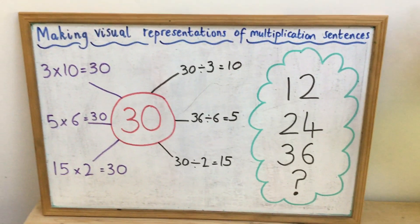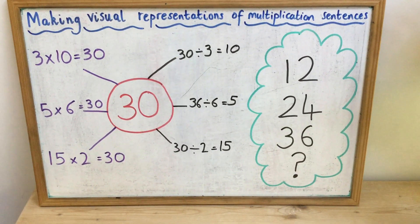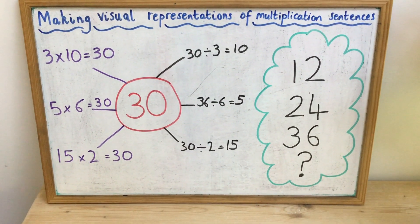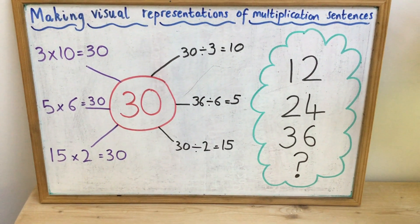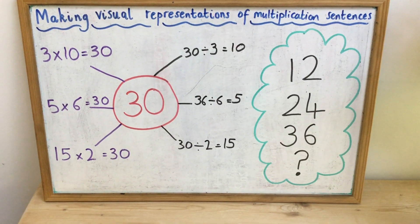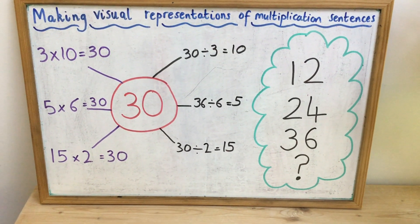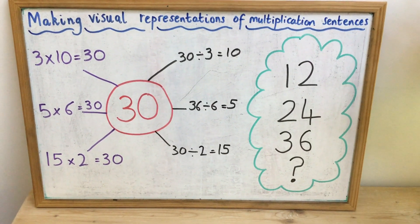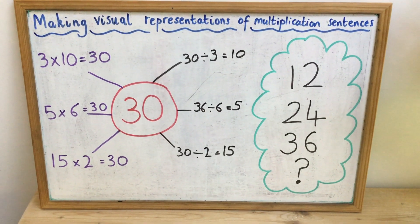So if you look on the right hand side of my board, you've got the numbers 12, 24 and 36. So if you start with 12, think about which times tables 12 is in. And see how many multiplication sentences you can create using resources from your house that will make 12.